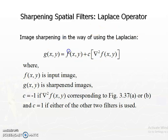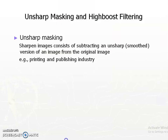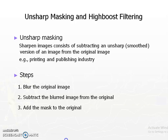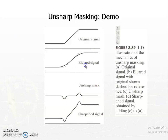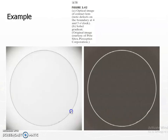Returning to unsharp masking: add the original image to a scaled high-pass filtered version. The gradient of the image, multiplied by some gain and added to the original, gives an image with enhanced high-frequency components. The process: blur the original, subtract the blurred image from the original to get the mask, then add it back. Sharp transitions are enhanced, low-frequency details are removed, and high values at transitions are boosted. This is the result of unsharp masking.